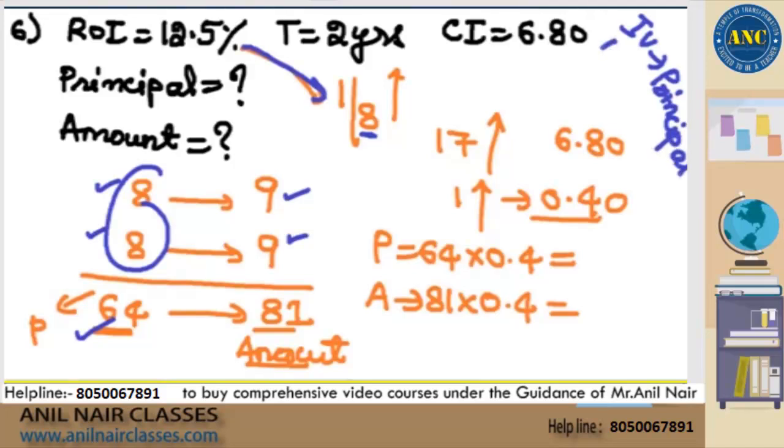The initial value corresponds to principal. Always remember, initial value corresponds to principal, final value corresponds to amount. Initial value it is 64, finally it is 81. 64 I gave, I got 81. How much increase?